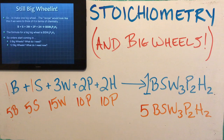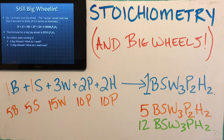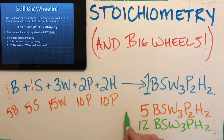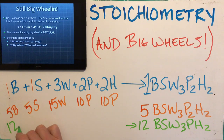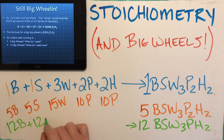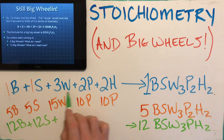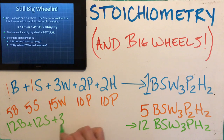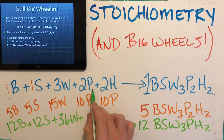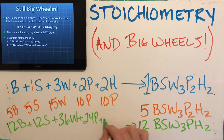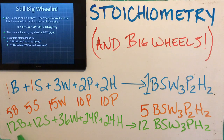What would happen if we needed a dozen big wheels? Now we have a 12 in front. We'd need 12 bodies, 12 seats, 12 times 3 which is 36 wheels, 12 times 2 is 24 pedals, and 24 hand grips. If you get me 12 bodies, 12 seats, 36 wheels, 24 pedals, and 24 hand grips, I can get 12 big wheels out of that.